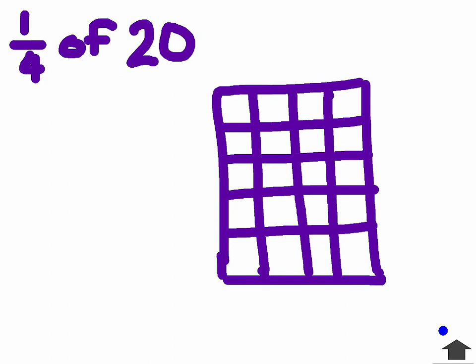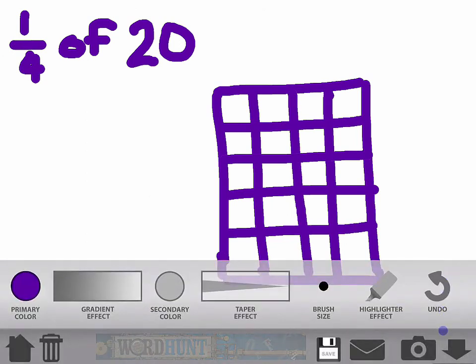And I want to know just what one-fourth of that twenty is because, for example, maybe I'm only using that one-fourth for walking paths or for a garden. But I need to know how much space I get to use.